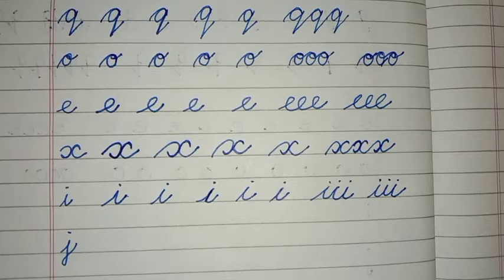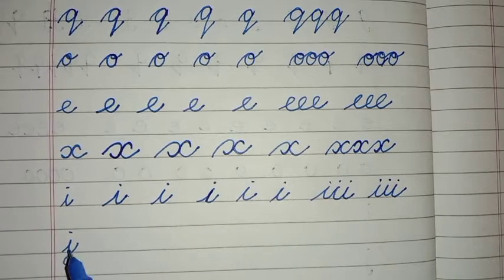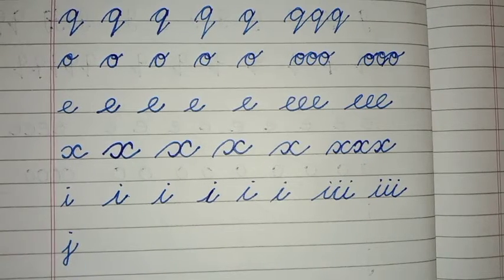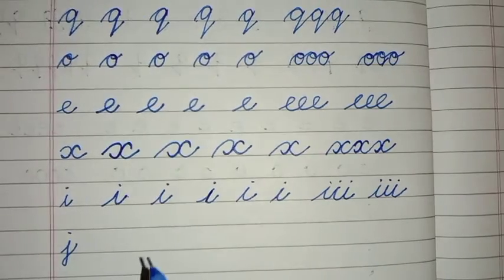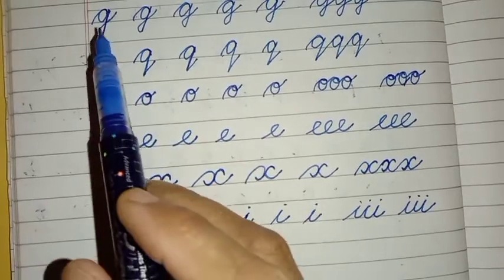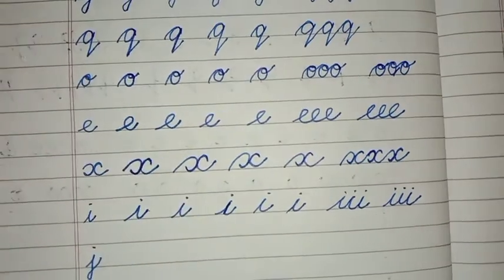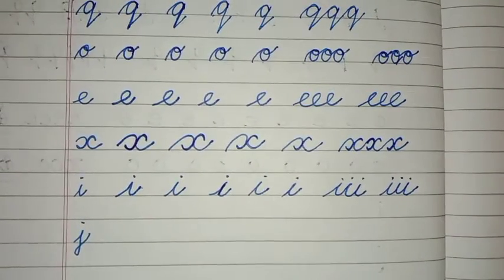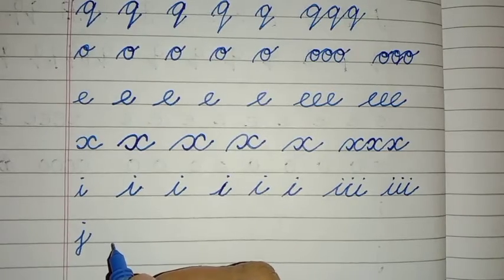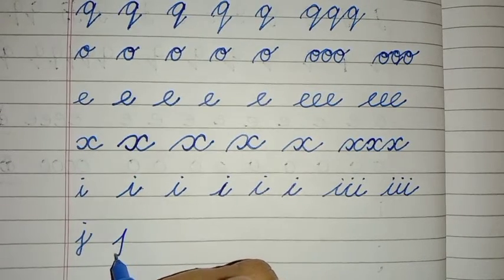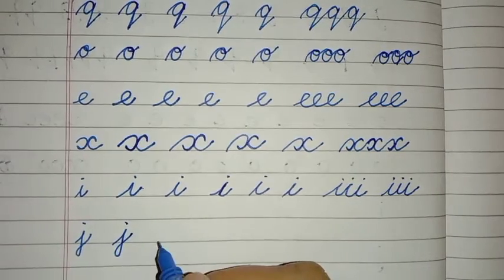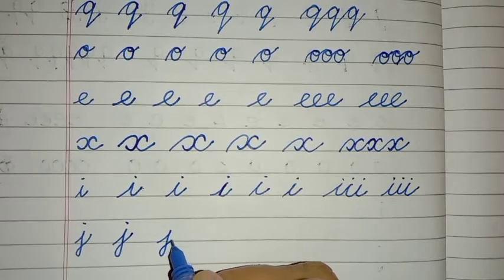So now next is J. J is also like I but the bottom part of J is like G. You can see you have made G before. Here the bottom part of J is like G. So here we go. This is I structure and the bottom part goes like G.